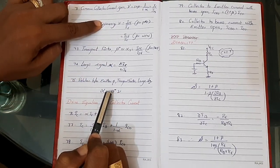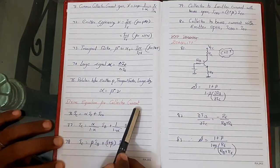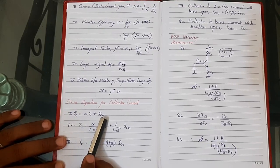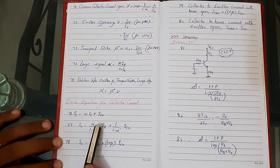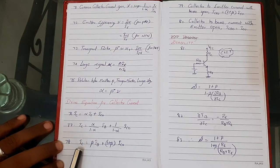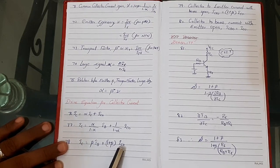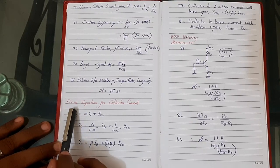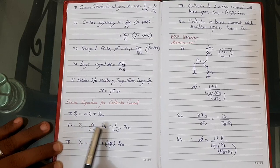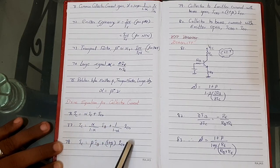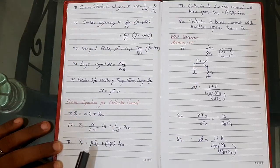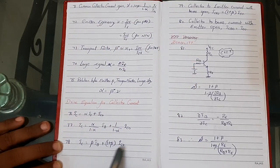Drive equations for collector current: Number 76: IC = α·IE + ICO. Number 77: IC = [α / (1−α)]·IB + [1 / (1−α)]·ICO. Number 78: IC = β·IB + (1+β)·ICO. In these three formulas, when emitter current is given use formula 76; when base current is given use formula 77 or 78. Note that α/(1−α) = β, so formula 77 is a derivation of the configuration formulas.